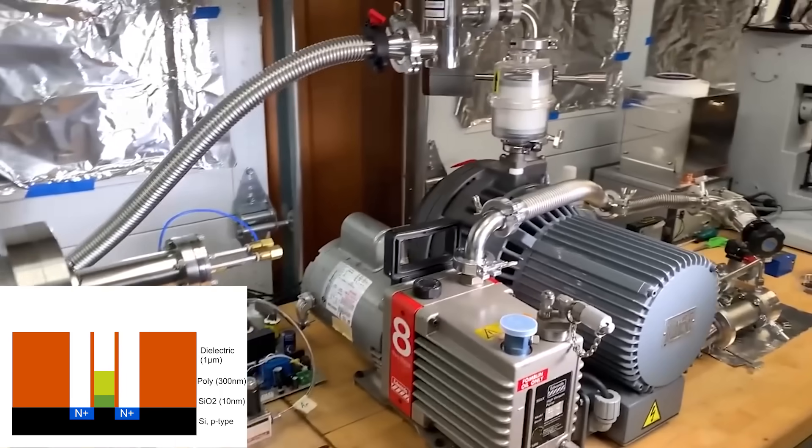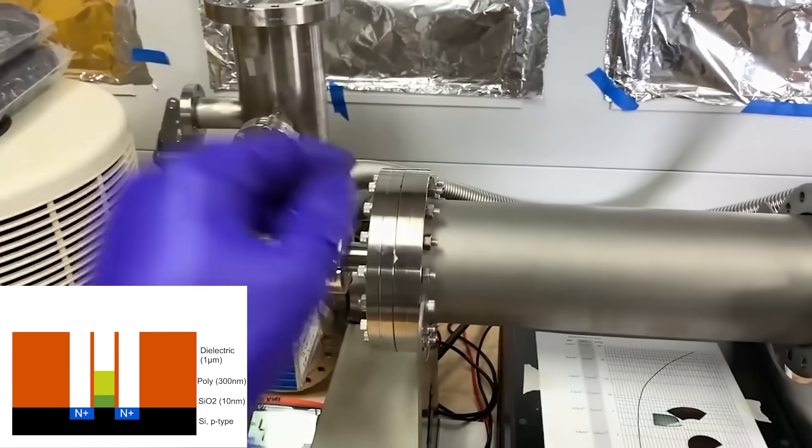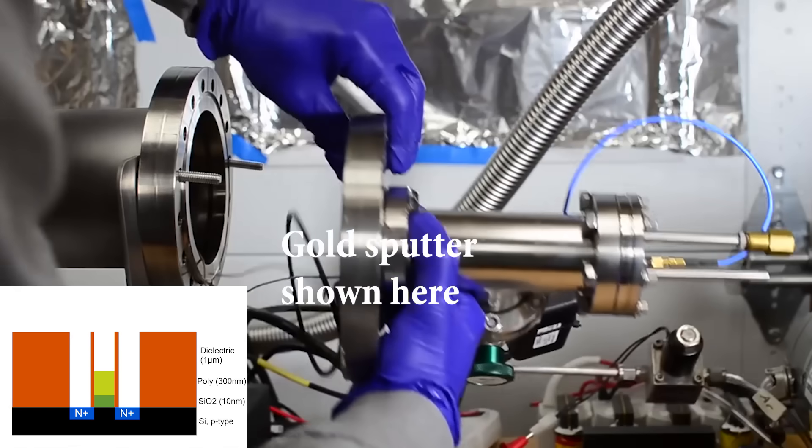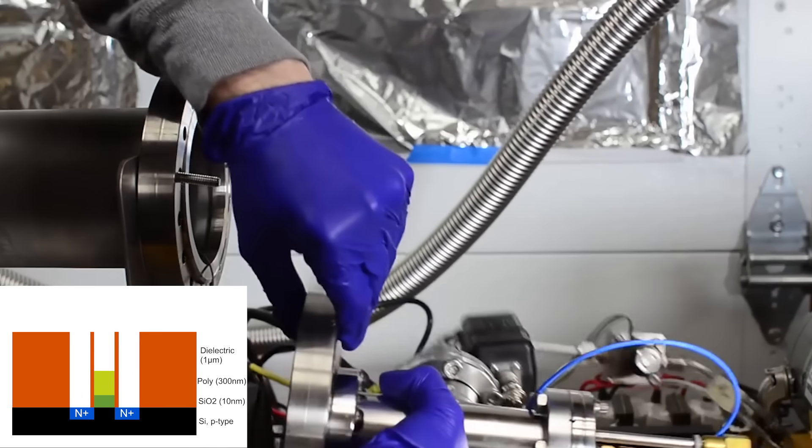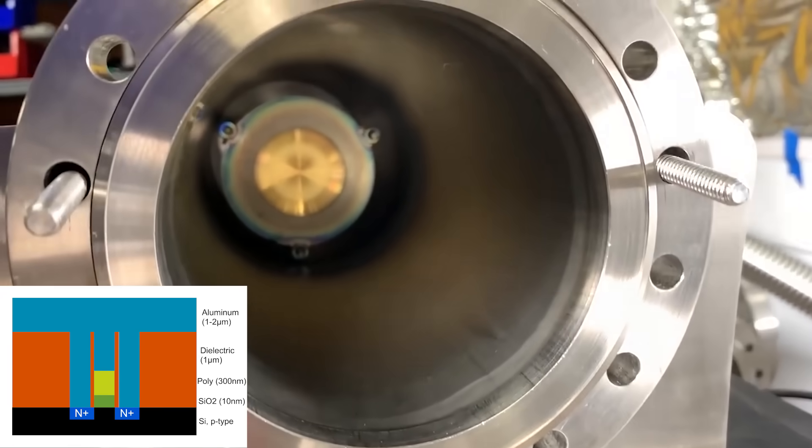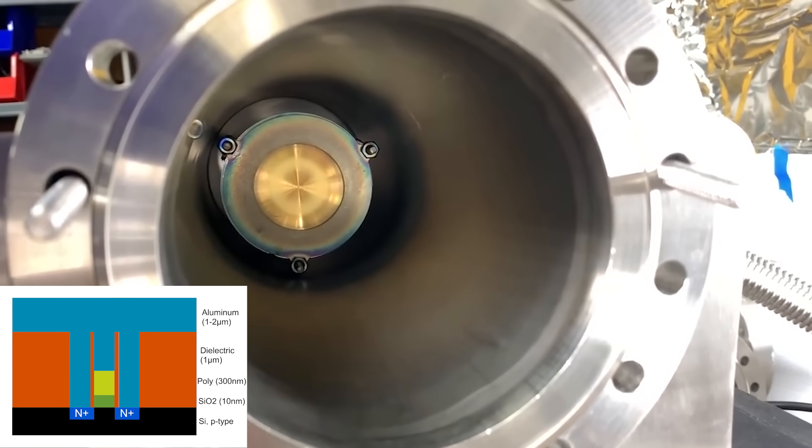Then we stick the wafer into a vacuum chamber to either sputter or thermally evaporate metal. I'm evaporating aluminum, a thick layer of about a micron or so, and then we do the whole photolithography process again of spin coating and exposing and developing to define that metal layer.